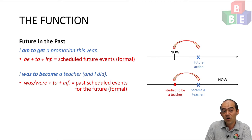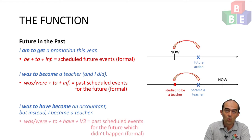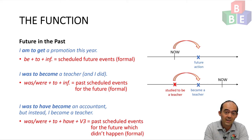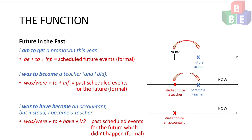If the scheduled event did not happen, I would use a different structure. For example, 'I was to have become an accountant, but instead I became a teacher.' Here I am using was or were plus to plus have plus verb three — the past participle — to talk about past scheduled events for the future which didn't happen, and again I'm using this construction formally. In the past I studied to be an accountant — I was to have become an accountant — but I decided I didn't want to do that, so I changed to study to become a teacher, and eventually I did become a teacher, not an accountant.